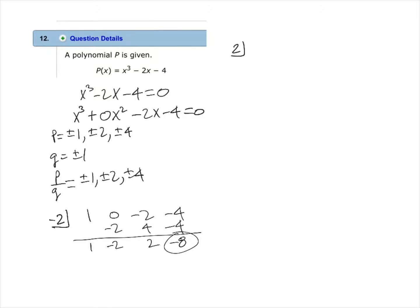We will try 2 this time. So we have 2 and then the coefficients again: 1, 0, negative 2, negative 4. Leave a space and draw a line.